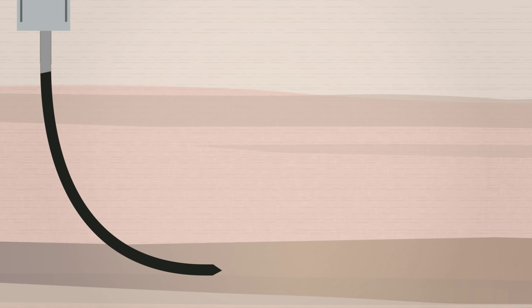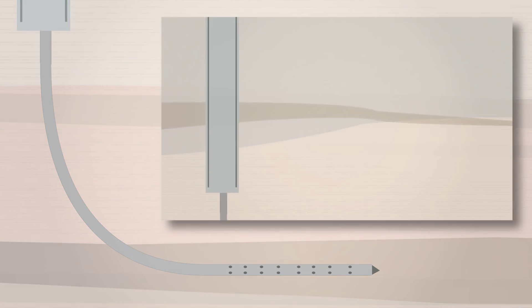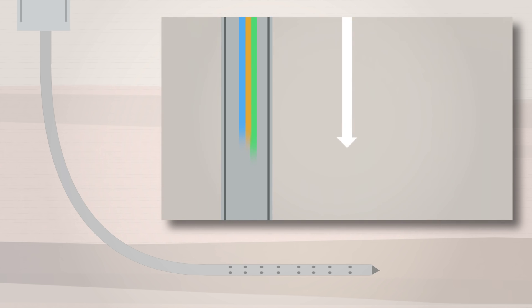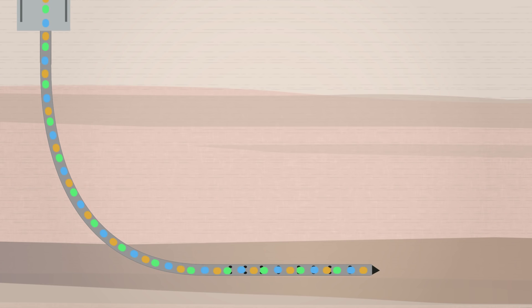Another casing, the production casing, is installed in the rest of the hole. Explosives are used to perforate the production casing and start fracturing the shale, so that the water, chemicals, and sand that will be injected into the well at high pressure can enter the shale rock formation.